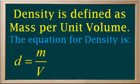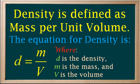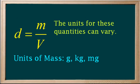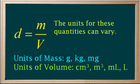The formula for density is given by the equation d equals m over v, where d is the density, m is the mass, and v is the volume. The units for these can vary. Mass is commonly expressed in grams, kilograms, or milligrams, while volume is commonly expressed in centimeters cubed, meters cubed, milliliters, or liters.